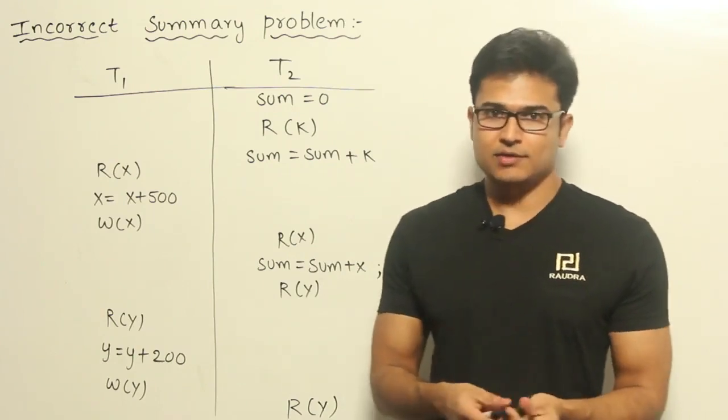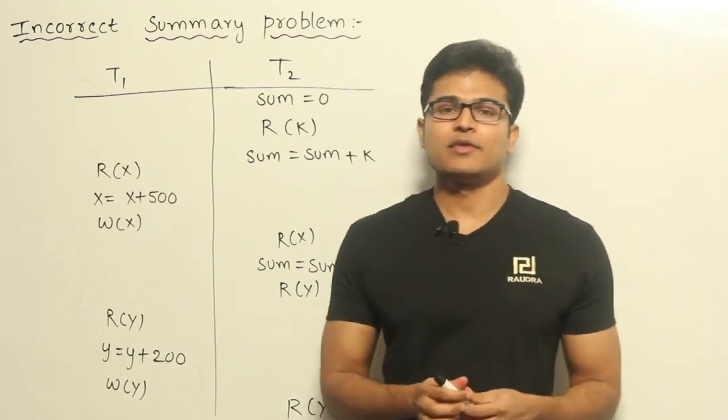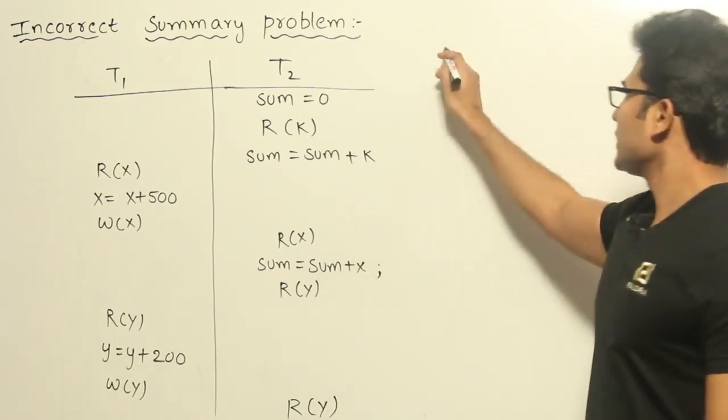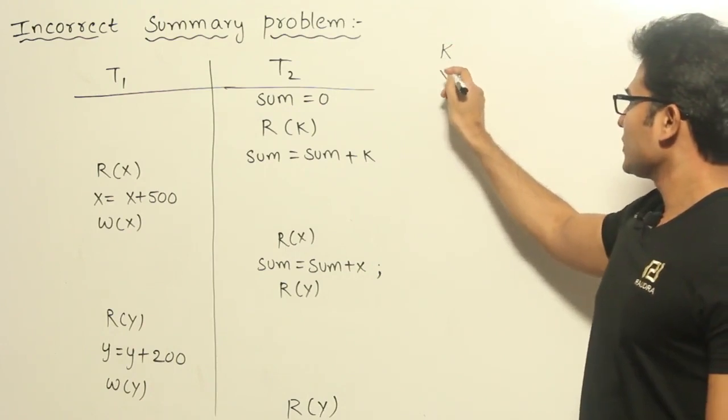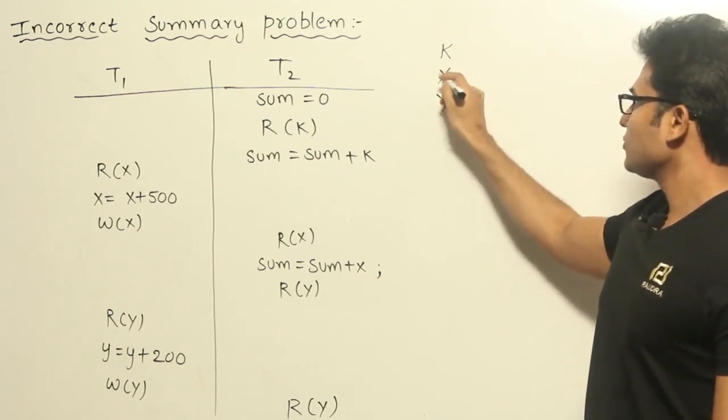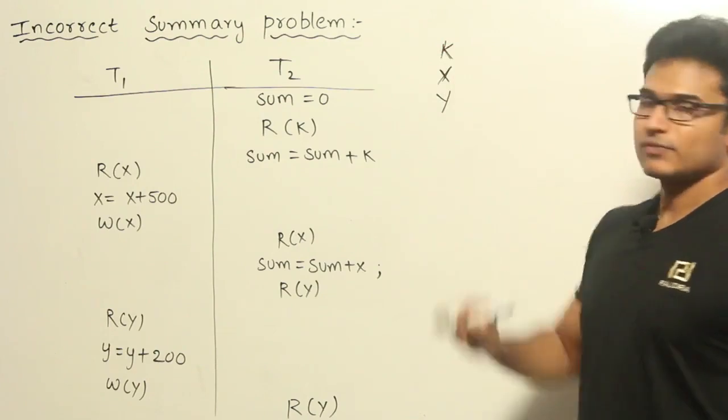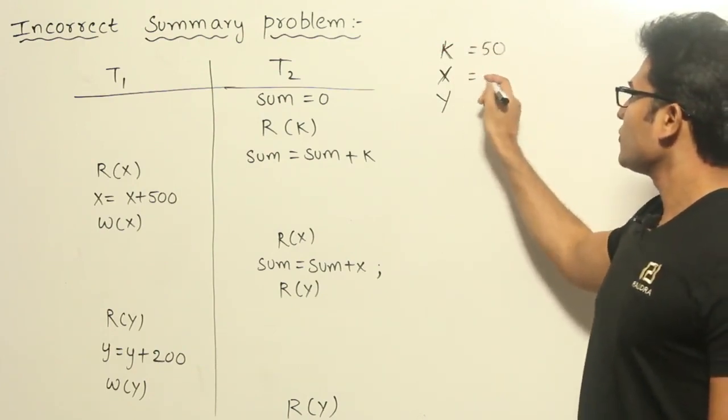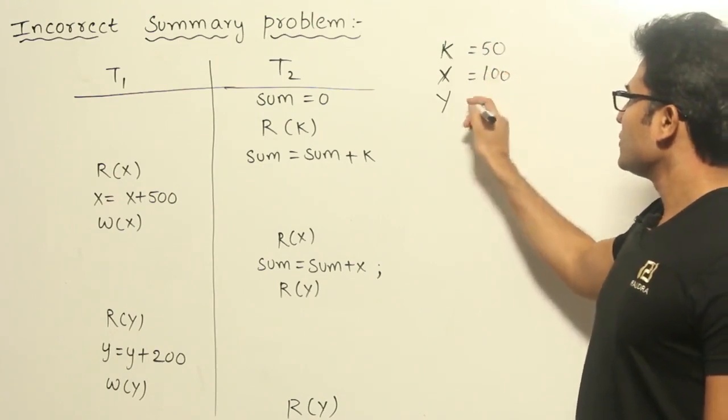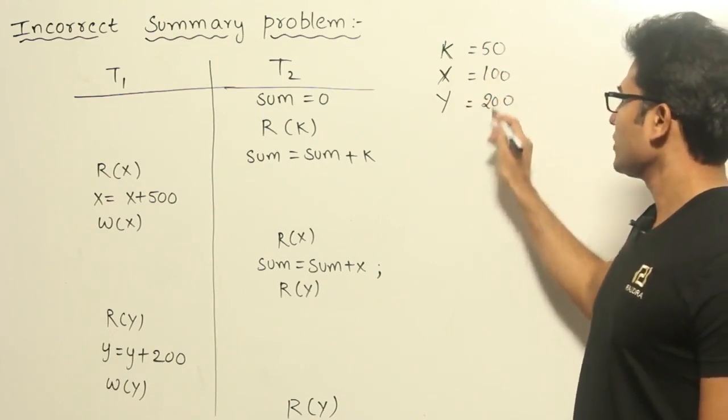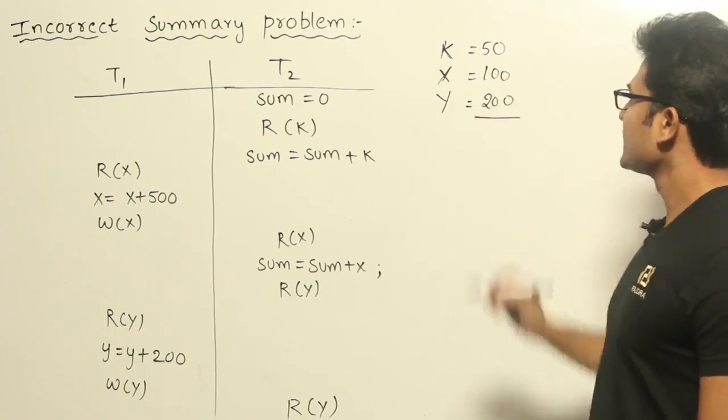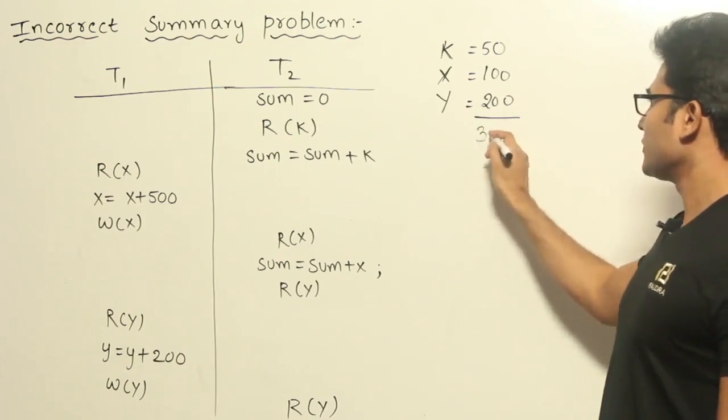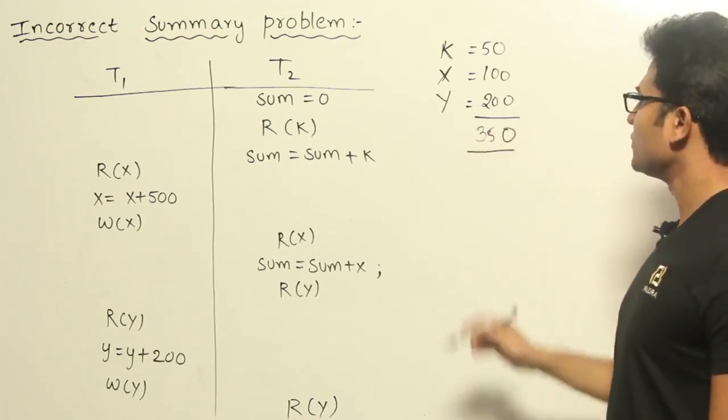So what I mean to say is, let us take an example here. Let us assume that there are three values you are trying to sum up. Let us say there is K and there is X and there is Y and you are trying to sum the values of these three. Now assume that initial value of K is 50 and initial value of X is 100 and initial value of Y is 200. Now if you try to find out the summary, I think it is going to be 350. If you try to add all the values up, it is supposed to be 350.